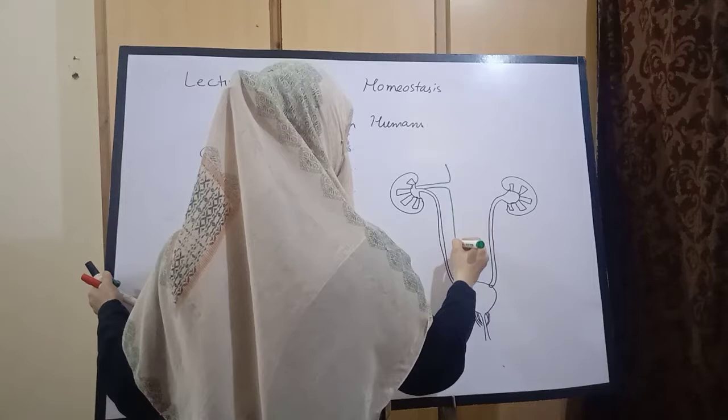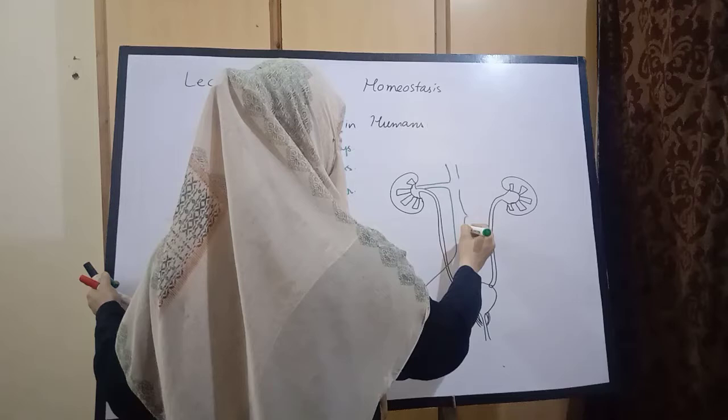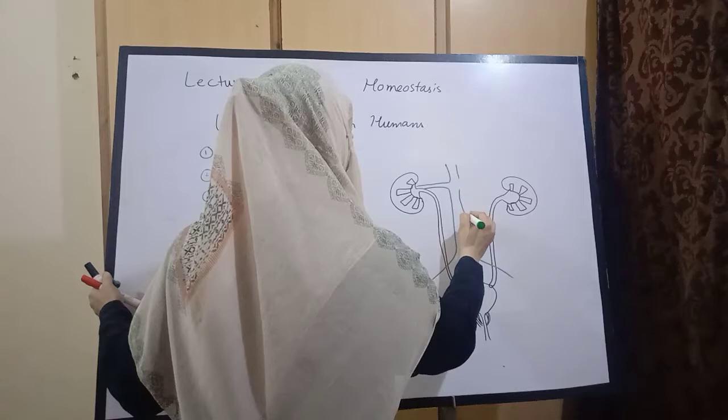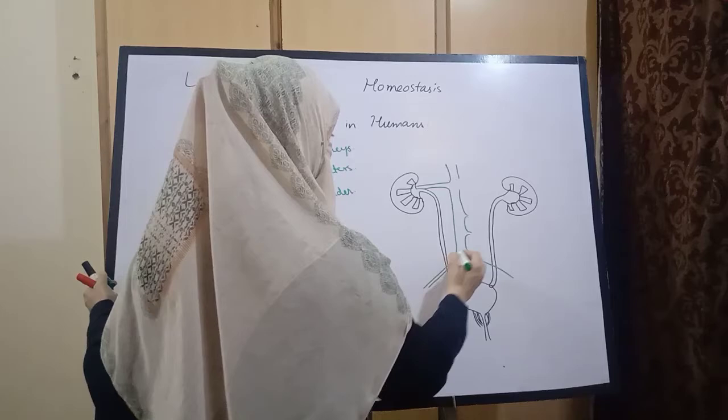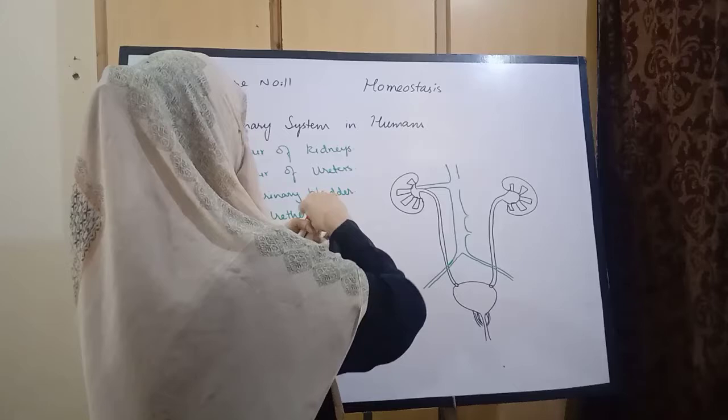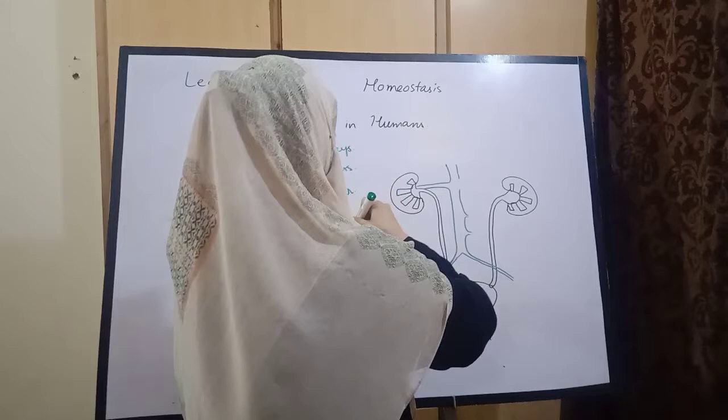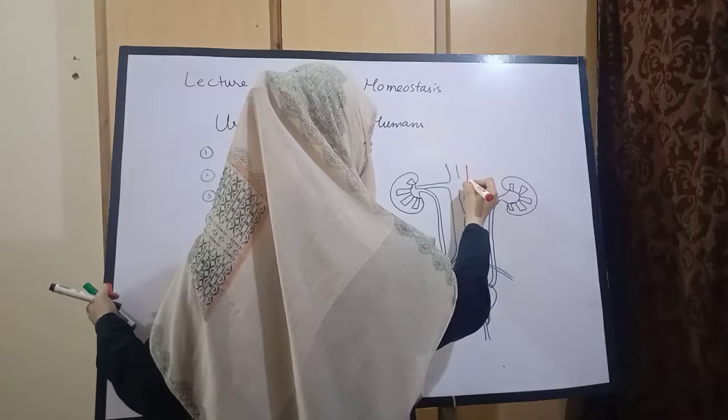اس کے علاوہ ہمارے پاس ایک artery اور ایک vein ہے۔ Arteries وہ ہیں جو kidneys کی طرف oxygenated blood لے کے جاتی ہیں، اور veins وہ ہیں جو kidney سے deoxygenated blood لے کے باہر آتی ہیں۔ یہ ہے right renal vein۔ اور یہ ہے left renal artery جو kidneys کے اندر enter ہوتی ہے oxygenated blood لے کے۔